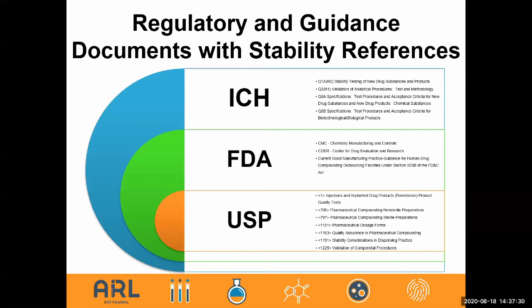You'll see a lot of regulatory and guidance documents with emphasis on stability or beyond-use dating — references that have been out for many years, actually decades. The ICH — the International Council for Harmonization of Technical Requirements for Pharmaceuticals for Human Use — has listed guidance documents, as have the FDA and USP, which has many general chapters on BUD and stability studies. They all are encompassing and working together, and the nice thing about ICH is that harmonization from a more global perspective.